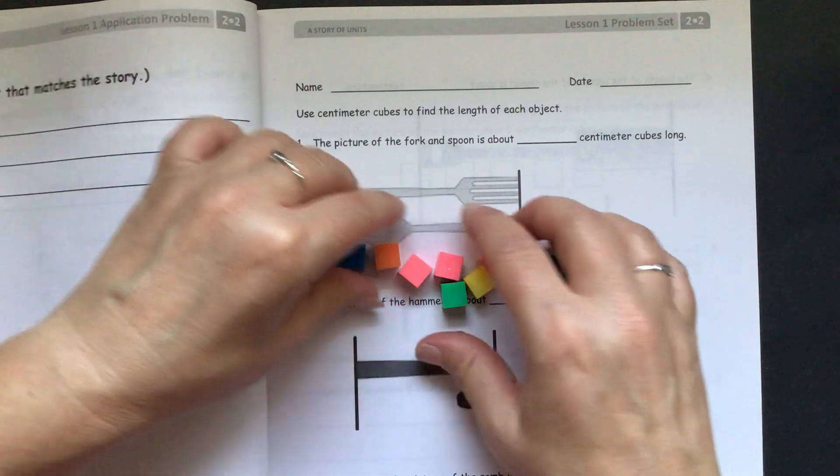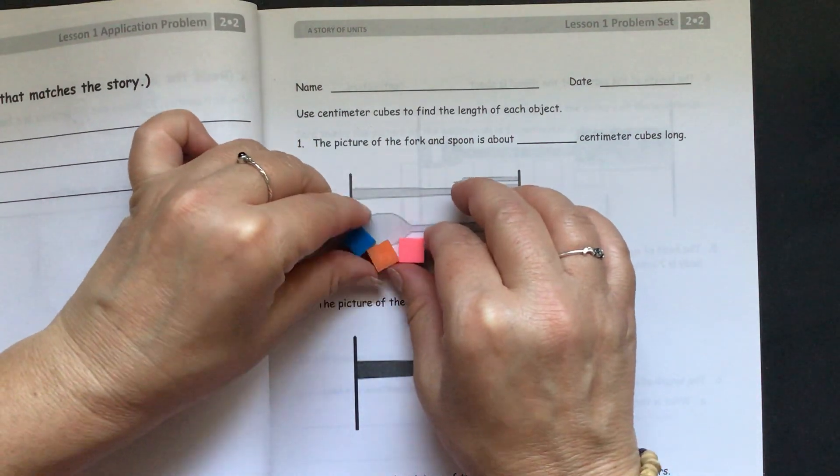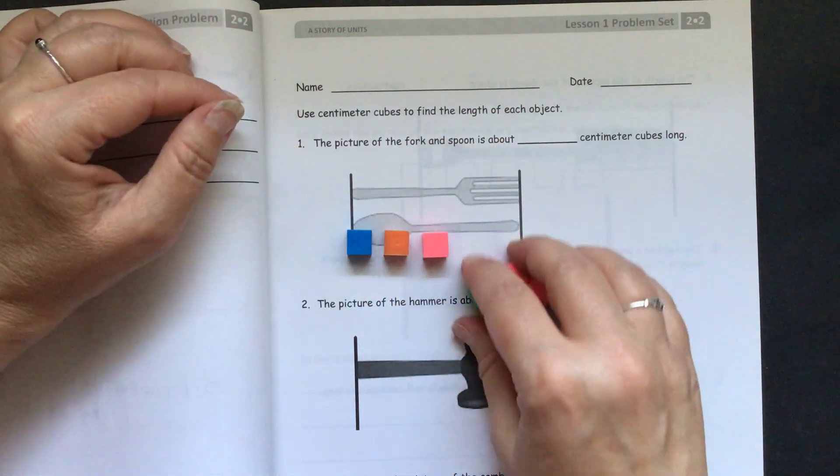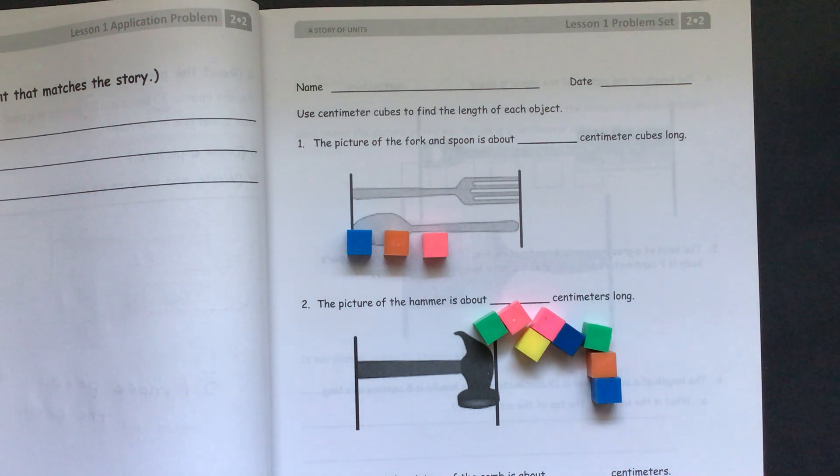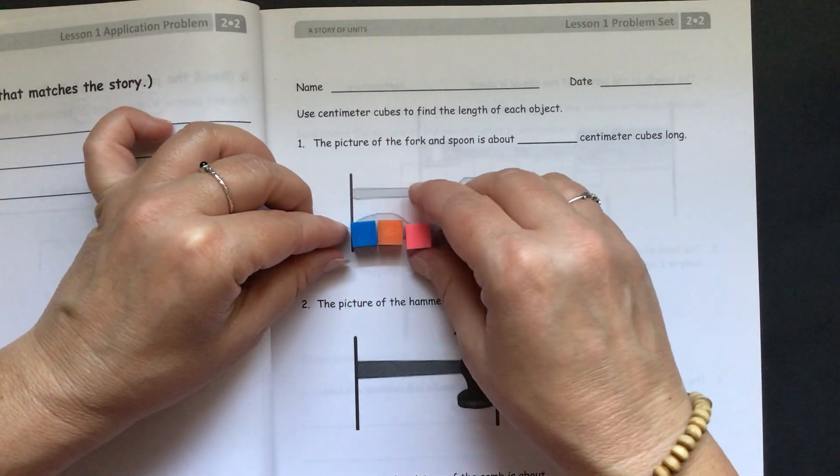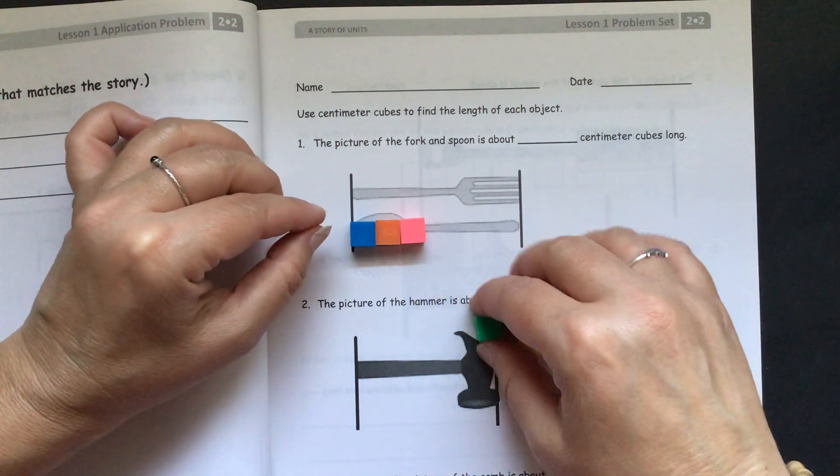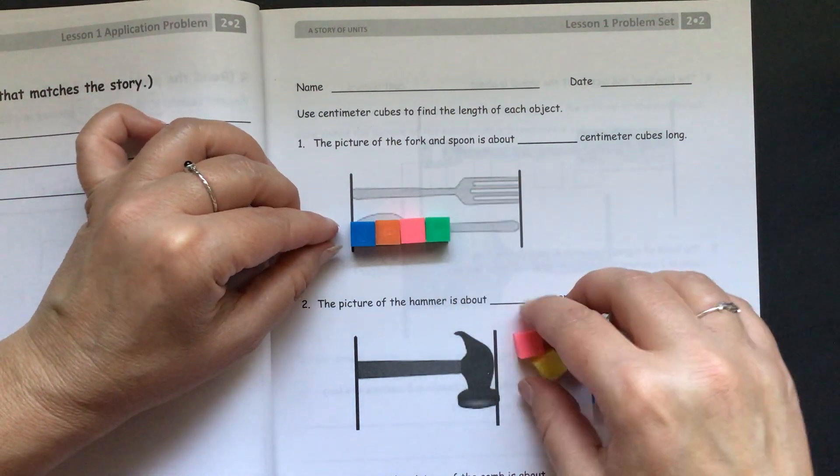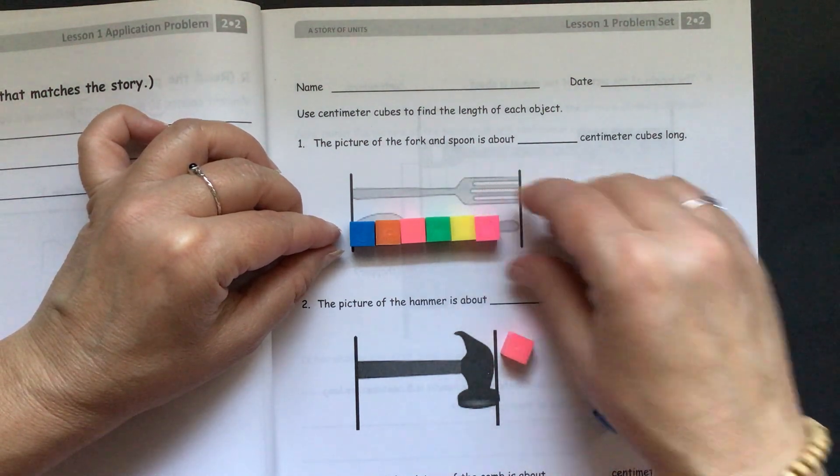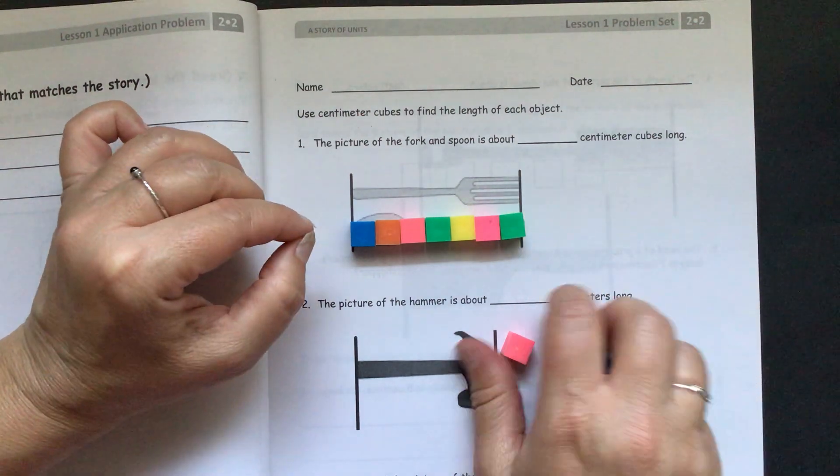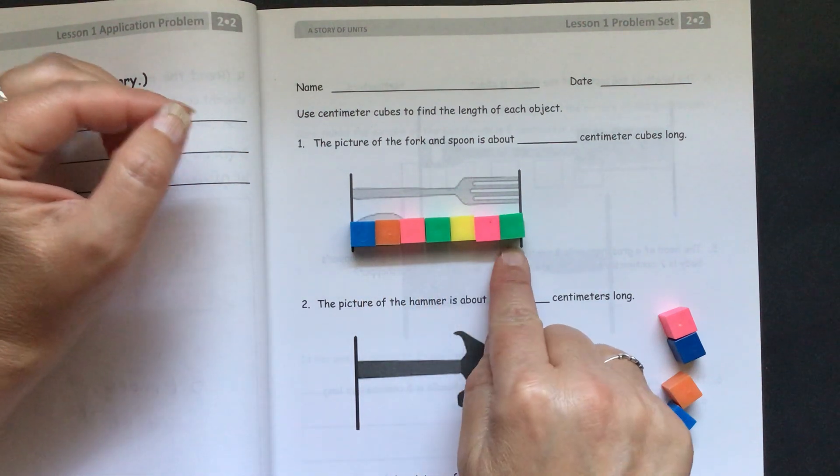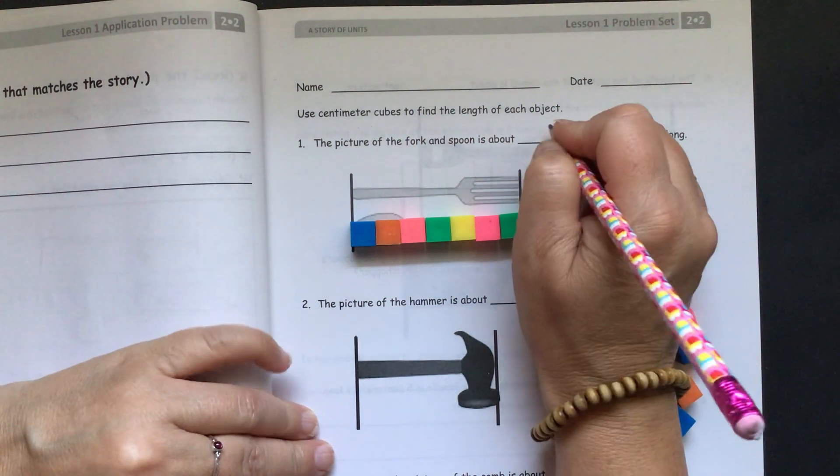Now the thing is, when you're measuring, you have to have the cubes right next to each other. If you have them spaced out, then it's not going to give you an accurate measurement. You want to make sure we have them all next to each other. So we measure straight on this line, line it up there. And we can see we used 1, 2, 3, 4, 5, 6, 7. So we used seven centimeter cubes.